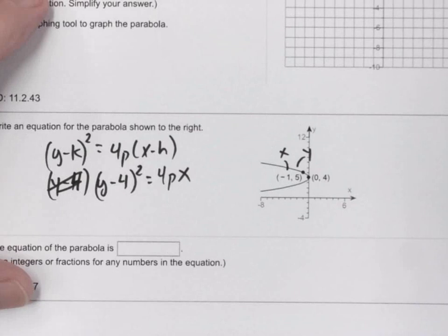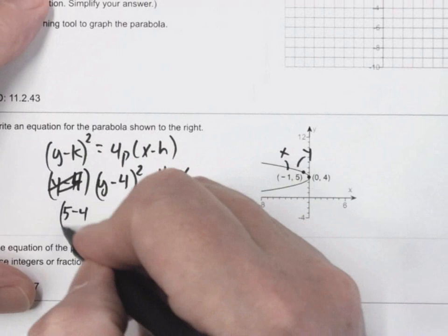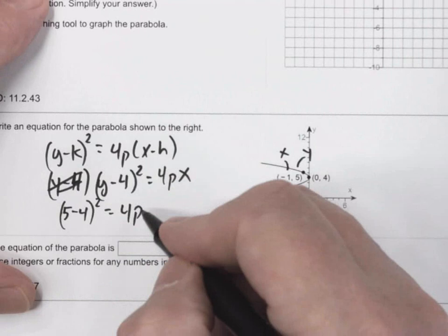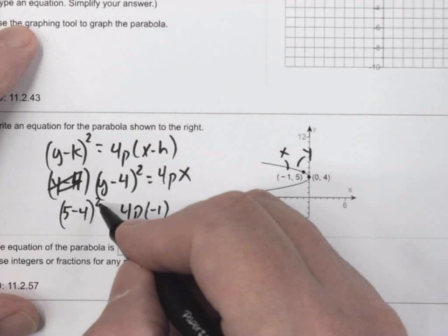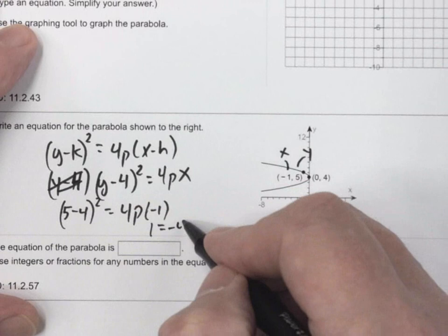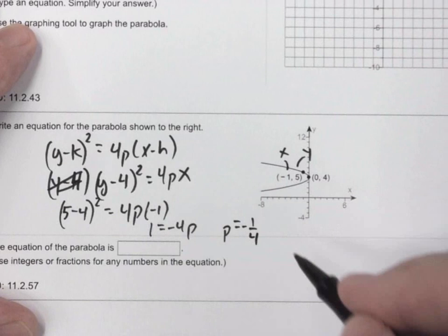So if I plug in 5 for y, (5 - 4)² = 4p times x. x is -1. So this is 1² = -4p. So 1 = -4p. It looks like p = -1/4.